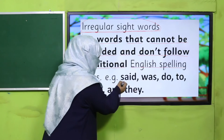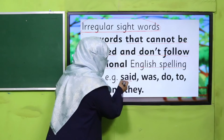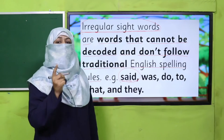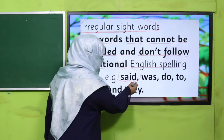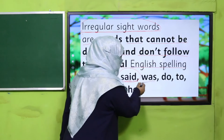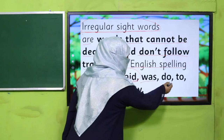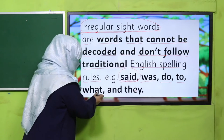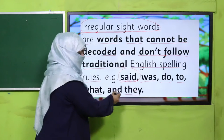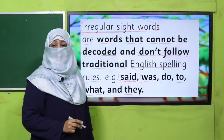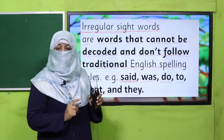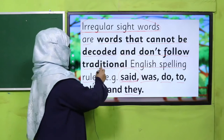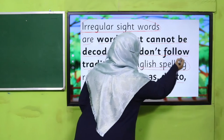For irregular sight words, we need to learn to say them. You cannot say them by sounding out individual sounds and blending. So you need to learn how each word is said — for example: 'was,' 'do,' 'to,' 'what,' 'they.' These are words which don't follow a regular pattern of English spelling.